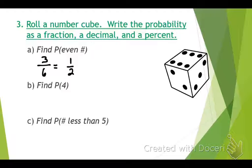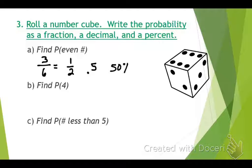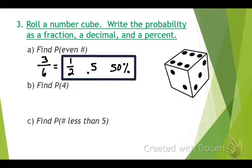What would that be as a decimal? Zero point five. And as a percentage? Fifty percent. So we've got a 50-50 chance — there's a 50% chance it could be an even number. I'm going to roll it — it was a six. Did I get an even number? Yes.